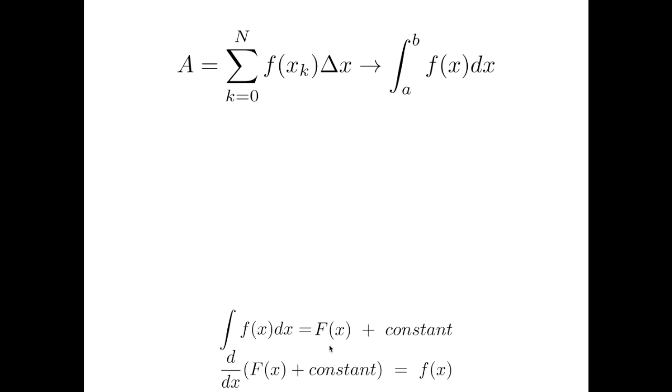If I know the primitive, this F of x plus a constant, I can immediately calculate, according to the theorem of integral calculus, this area by taking the primitive and calculating in the upper extreme, and subtracting the value of the primitive, computed in the lower extreme.